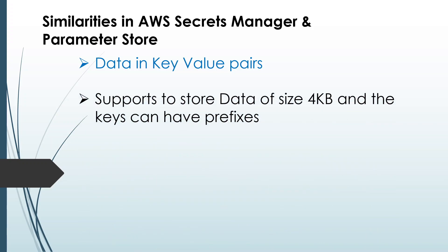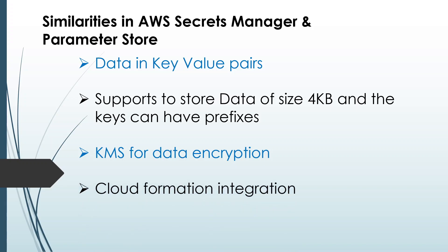Both support at least 4 KB of data stored in each parameter or each secret. When storing data in either Secrets Manager or Parameter Store, you can use KMS for encrypting the data. You configure the KMS key ID to use for encrypting the data stored in secrets or in Parameter Store. Both services support KMS as an encryption mechanism.